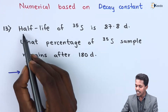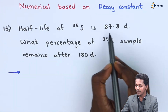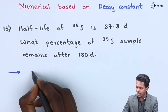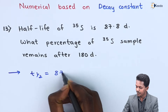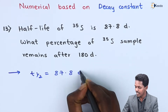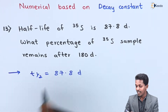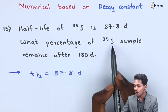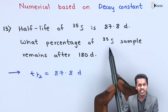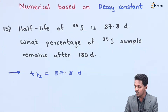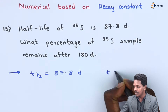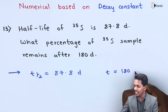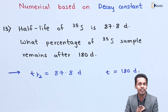The first thing given is the half life for sulphur-35, that is t½ = 87.8 days. They are asking what percentage of the sample remains undecayed after 180 days, so the time is also given as t = 180 days, in which we have to find out the change.